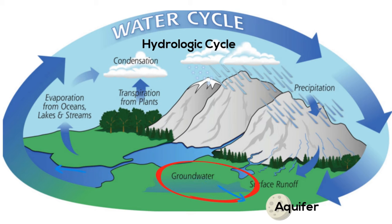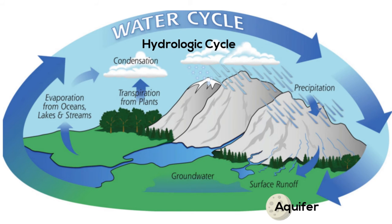The groundwater may take several different paths. It may seep its way into the ocean, rivers, and streams, or it may go into an aquifer, which is a body of saturated rock through which water can easily move. Or it may be released back into the atmosphere through transpiration — when leaves from trees and other vegetation give off water vapor.